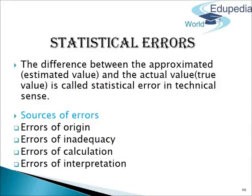Statistical Errors: There is a great difference in the meaning of mistake and error in statistics. Mistake means a wrong calculation or use of an inappropriate method in the collection or analysis of data. Error means the difference between the true value and the estimated value. In other words, the difference between the approximated (estimated) value and the actual (true) value is called statistical error in a technical sense.